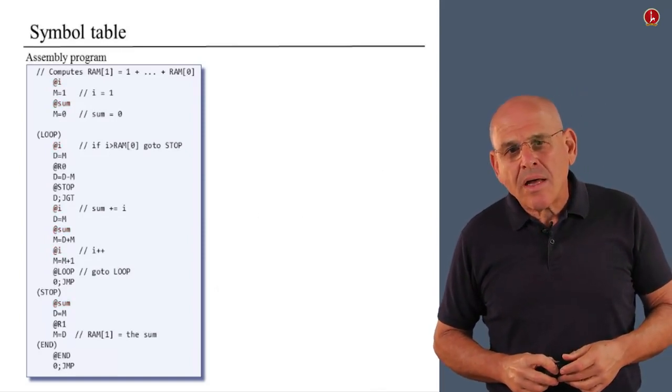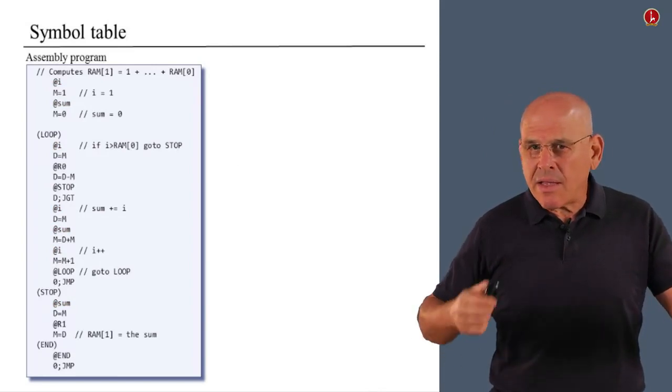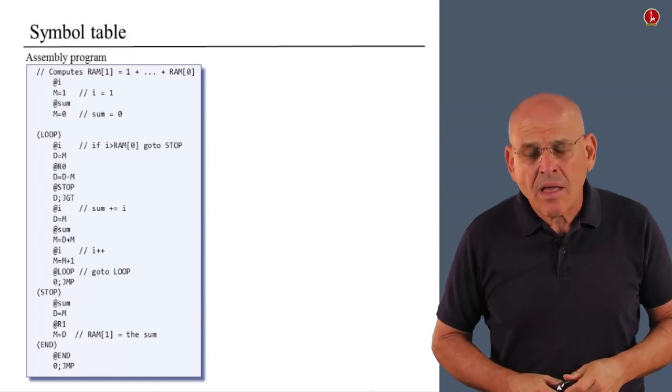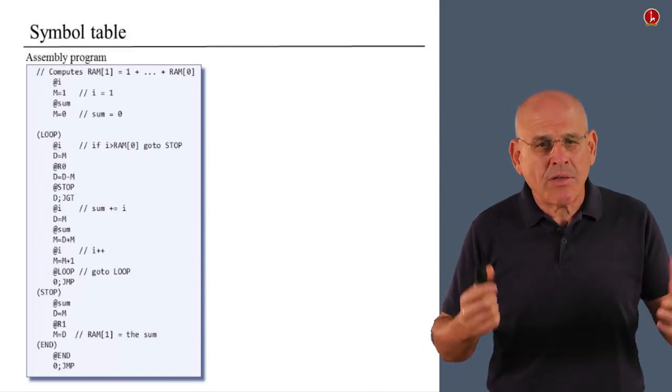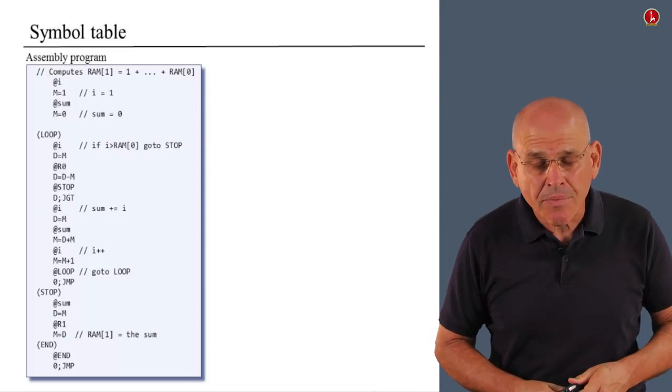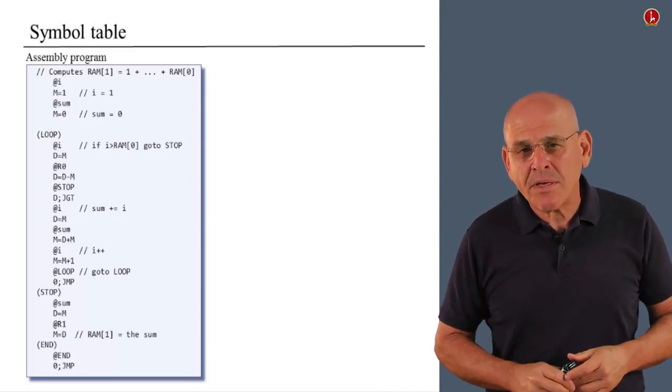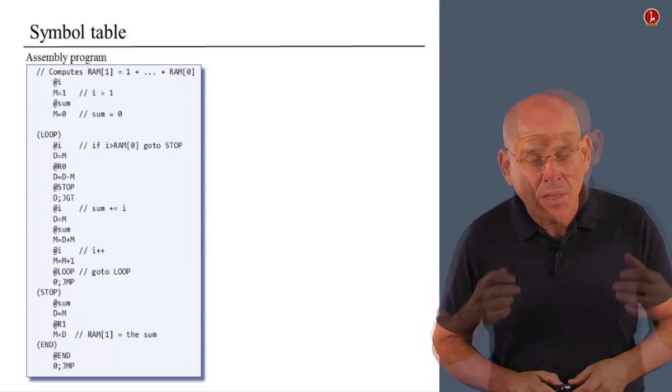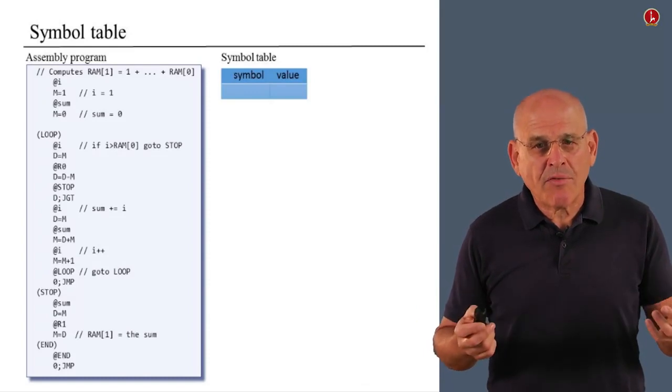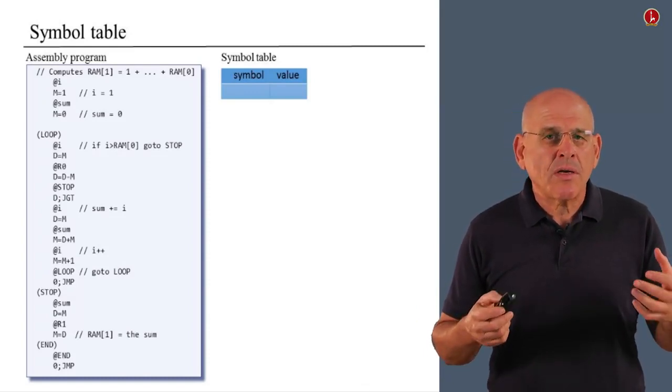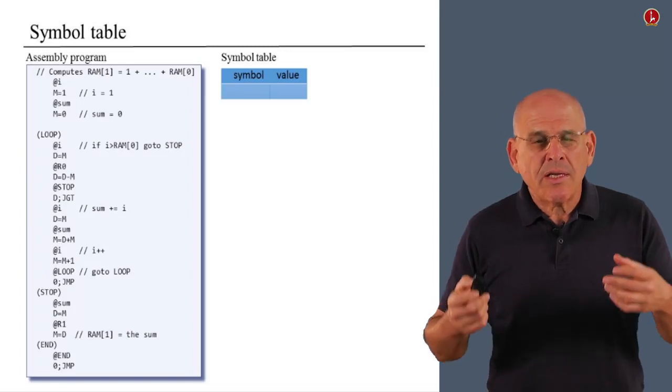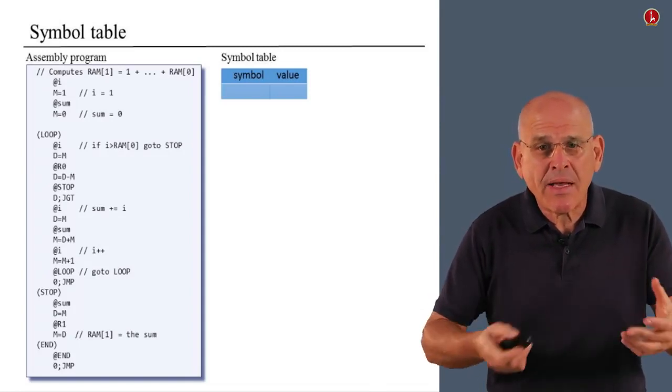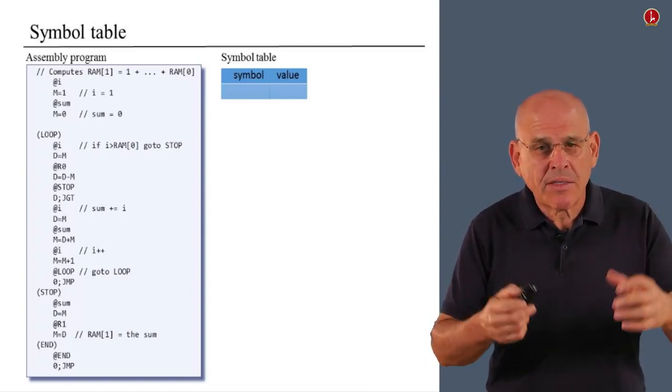Now, I think that you will agree with me that handling all these different kinds of symbols is a major headache. And what can we possibly do to make this task simpler? Well, exactly for this reason, computer scientists have invented an artifact called symbol table. The symbol table is a very simple and powerful data structure that enables you to store and use symbol value pairs.